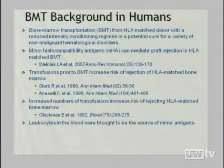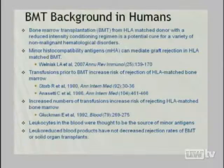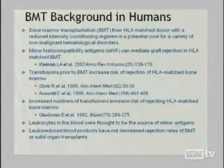The more transfusions you get, the more likely you are to reject — consistent with the data, but confounded by disease severity. Like the dog data, leukocytes were thought to be the offending antigen. However, since the implementation of essentially universal leukoreduction, the rates of rejection of bone marrow transplants in these patients have not decreased — largely based on European registry data analyzed by John Horne at Emory, not yet published — suggesting the antigens on non-leukocyte components of the blood may be responsible.